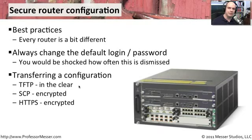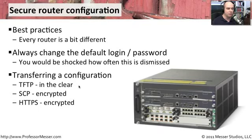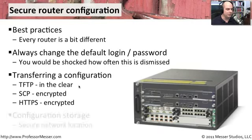If somebody wanted to see the configuration files you're transferring via TFTP, all of your very sensitive security information would be in there — all the IP address ranges and different resources available. If you got your hands on a firewall configuration, a router log, or a router configuration, there's a lot of useful information in there that bad guys would be able to use.